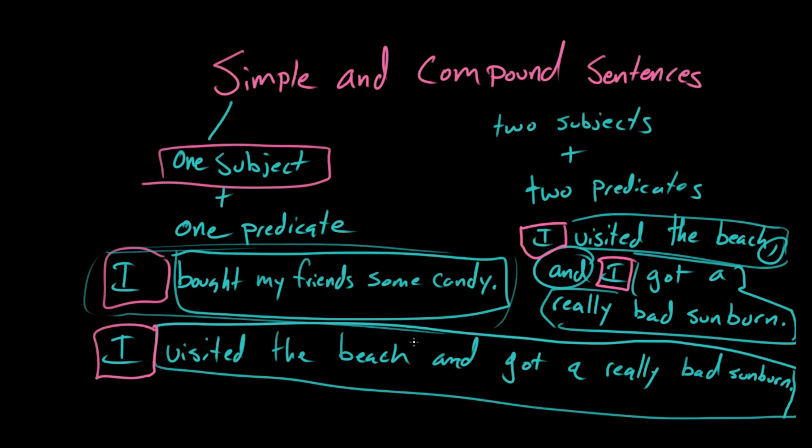But what you're saying is I couldn't divide this up into two sentences unless I put in another subject. Right. You can say I visited the beach, and that can be a sentence on its own. But you can't say and got a really bad sunburn as its own sentence. Okay. So, both of these things are simple. So, this has, even though this is a compound predicate, it's technically one predicate. Right.